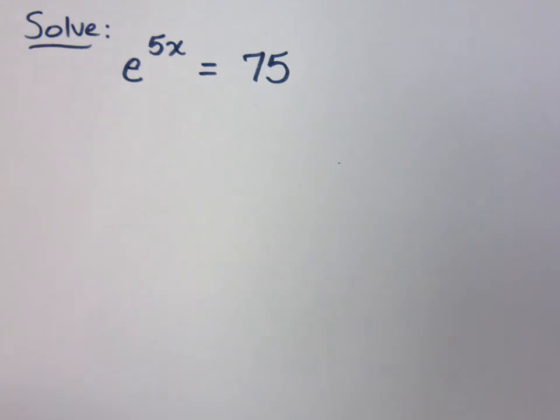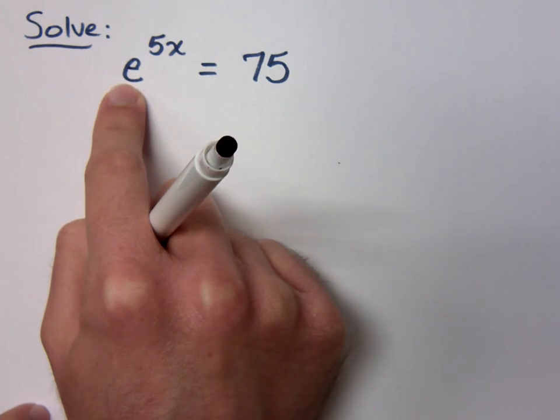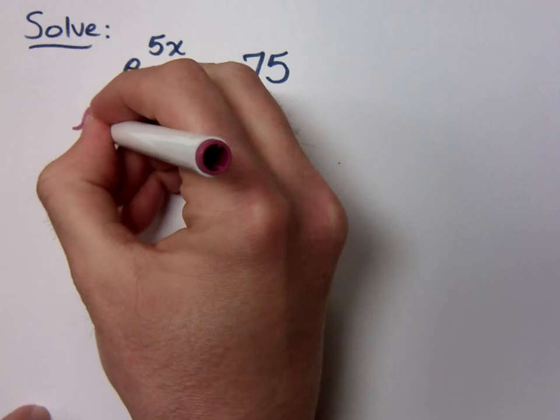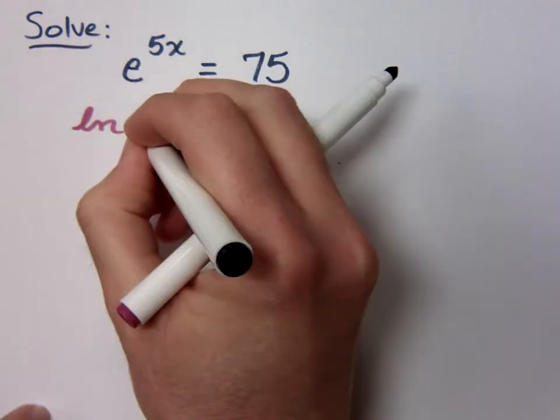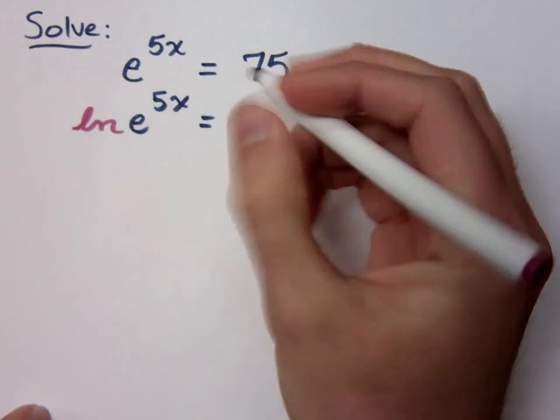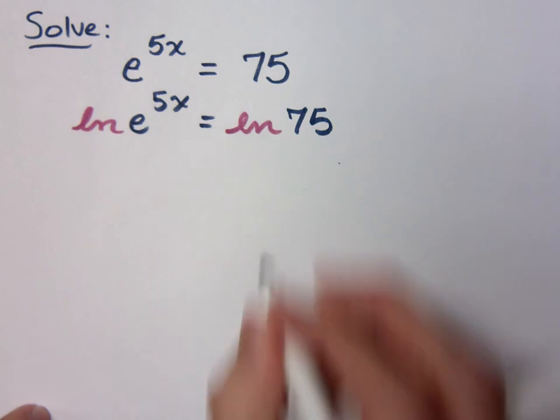Now, I could just do regular log, like the common log. If I say common log, that means log with base what? 10. But I think the natural log might be better for me here, because my base is e. And what is the base for the natural log? e. So if I do the natural log of e to the 5x is equal to the natural log of 75.